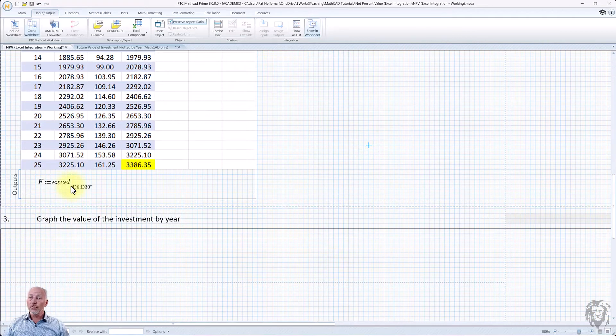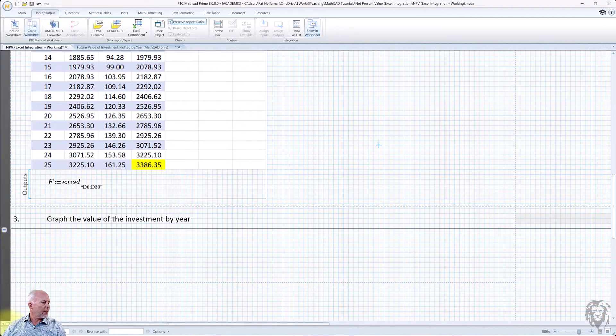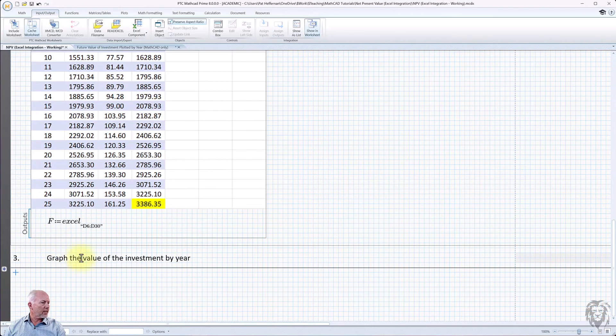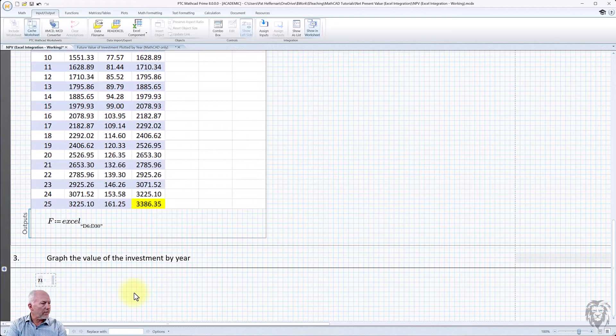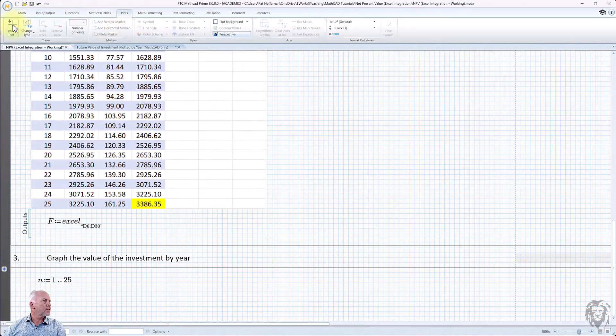So now what I want to do is to use that in my MathCAD calculation. And so the easiest way for me to do that in this case, I'm just going to open up some spacing and graph the value of the investment by year. And so to do that, I'm going to set up a range variable from one to 25 increments of one. And then I'm going to insert a plot. So wherever it plots, insert a plot. Let me scroll up here a little bit.